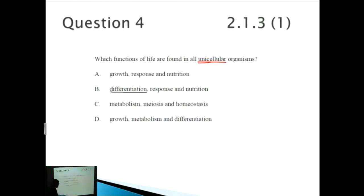A: Growth, response, and nutrition - yeah, that seems okay. B: Differentiation, response, and nutrition - well, just by definition, differentiation doesn't occur in unicellular organisms because differentiation refers to the fact that different cells of a multicellular organism can produce different functions. In this case, differentiation is wrong, so we know that's not B. Let's look at D - differentiation here as well. Let's get rid of it.